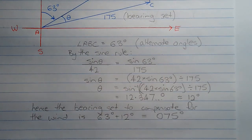Multiplying both sides by 42 and taking the inverse sine of both sides, we have theta is equal to the inverse sine of 42 multiplied by sine of 63 degrees divided by 175. And that equals 12.347 degrees, which is approximately 12 degrees correct to the nearest whole number.